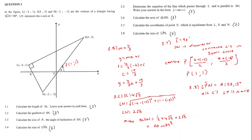If LPN is 53.13, LPS is equal to 126.87 angles on a straight line.